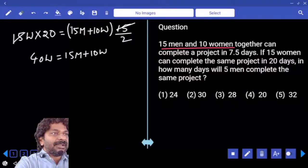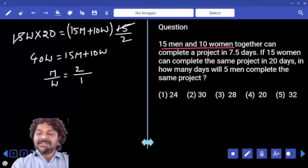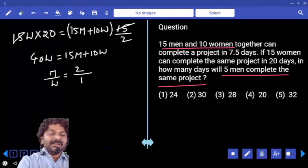Now the question is: 5 men will complete the same project in how many days? That's what the question. Now, women will do how many units of work and men? 15 women can complete the work in 20 days, you know this information.